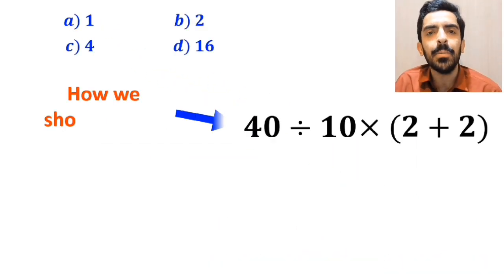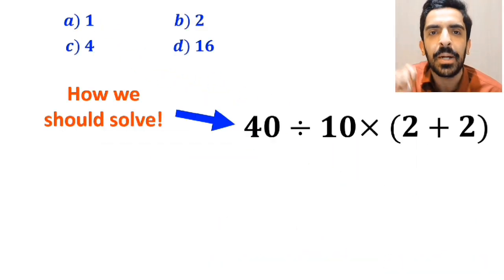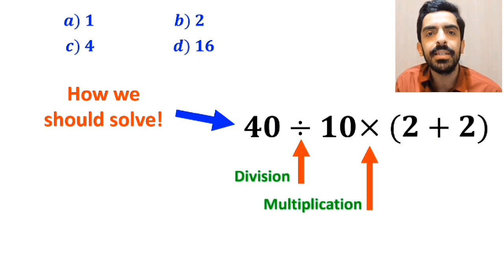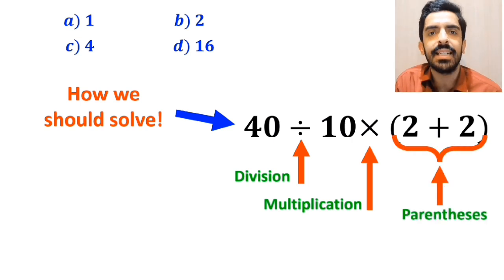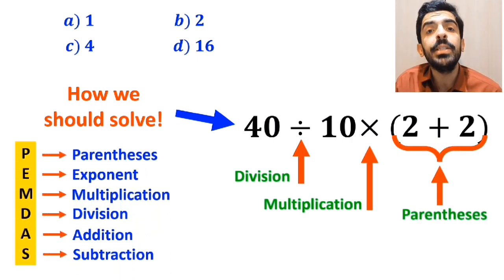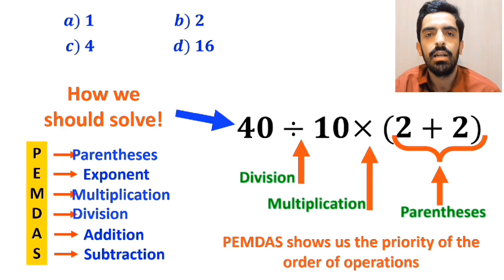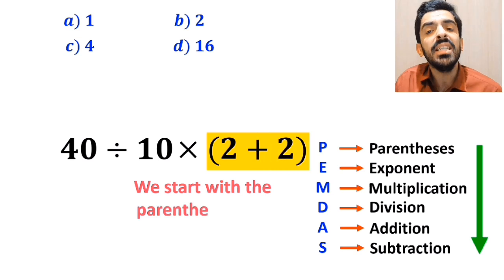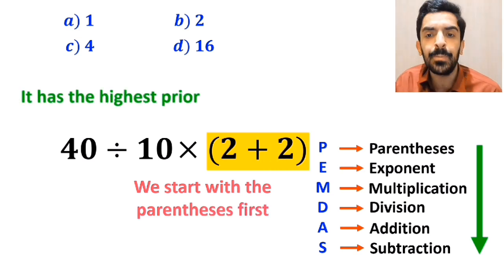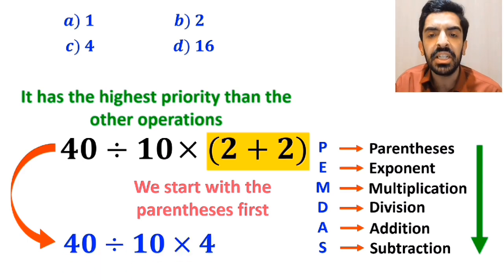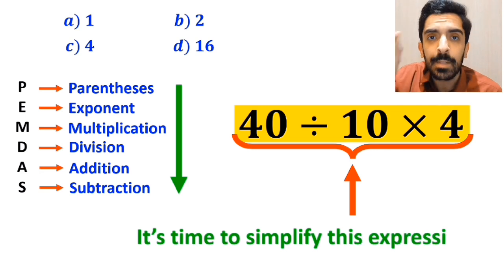Now let me explain step by step how we should solve this expression properly. As you can see on the screen, this expression has a division sign followed by a multiplication sign, and finally parentheses. To solve this we need to use the PEMDAS rule, which shows us the priority of the order of operations. We start with the parentheses first because they have the highest priority, so the expression simplifies to 40 divided by 10 multiplied by 4.